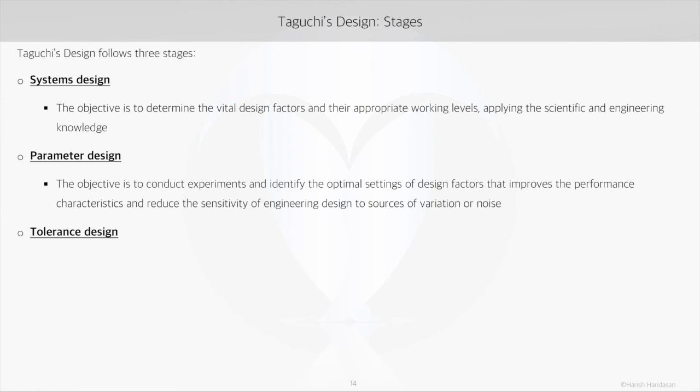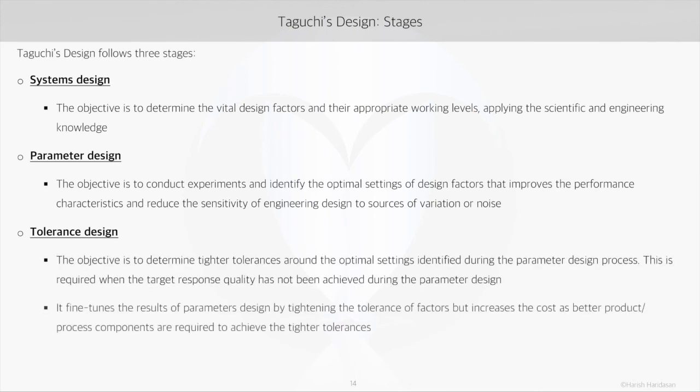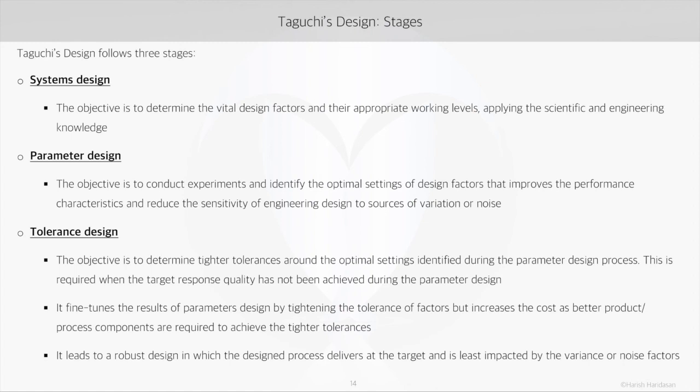The parameter design is all about conducting the experiments and identifying the optimal settings for the design factors. Ideally the design work should get completed by the end of the parameter design stage. But sometimes we would not be able to attain the target response quality after the parameter design, and then we need to determine tighter tolerances around the optimal factor settings identified — this is what happens in the tolerance design phase.